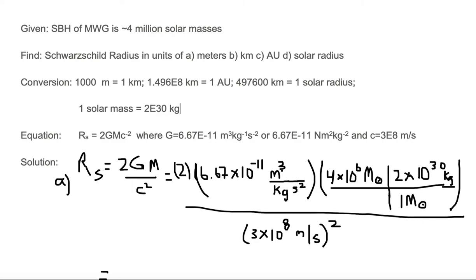Since our base units are meters, kilograms, and seconds, we must ensure c is expressed in the same units. We use c = 3×10⁸ meters per second, with the entire quantity squared in the denominator.